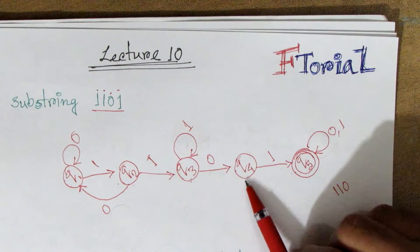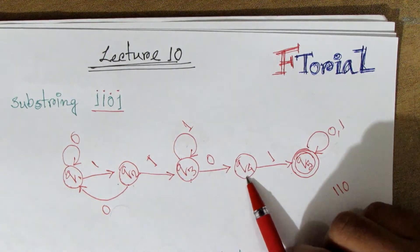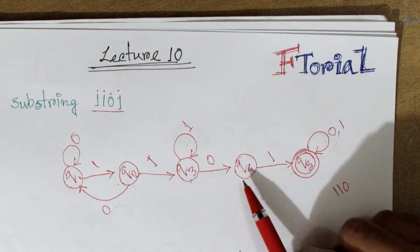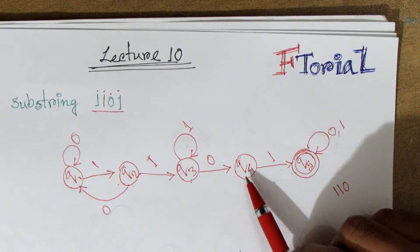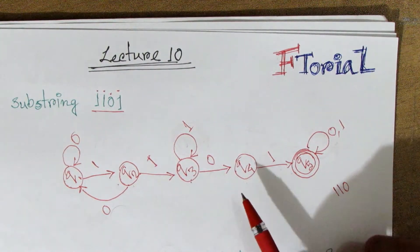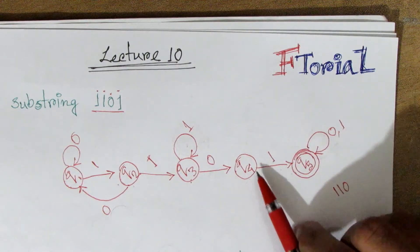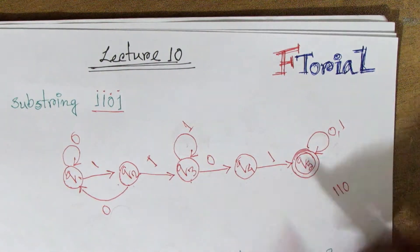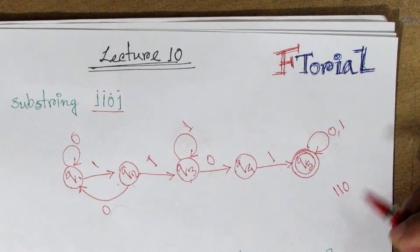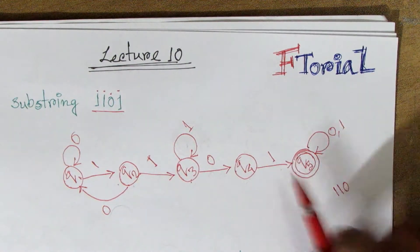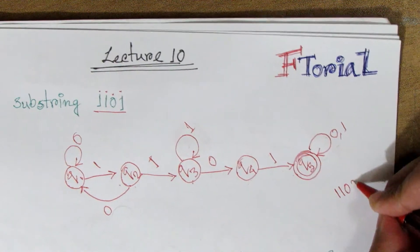So Q4 is 4. We have to proceed with 1, 5. But 1, 2, 0 is 0.